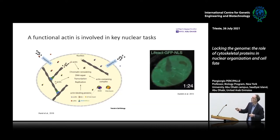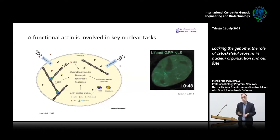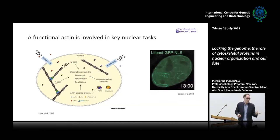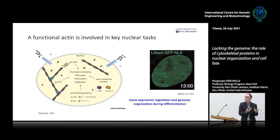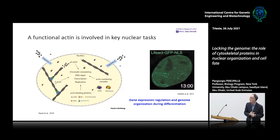We now know that actin in the nucleus polymerizes very dynamically — work from Robert Grosse's lab. Previously people could not see actin polymers or filaments in the nucleus, but now they can be visualized using chromobodies expressed directly in the system. Because of all this, we started thinking that the connection between actin and gene expression regulation is also intimately related to having the correct genome organization during differentiation.